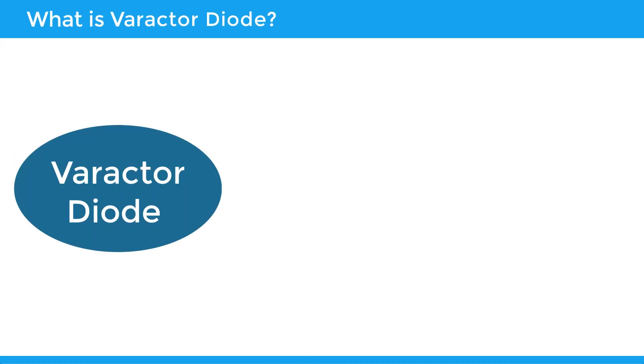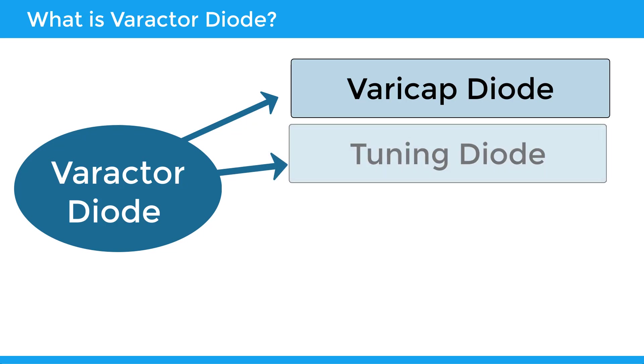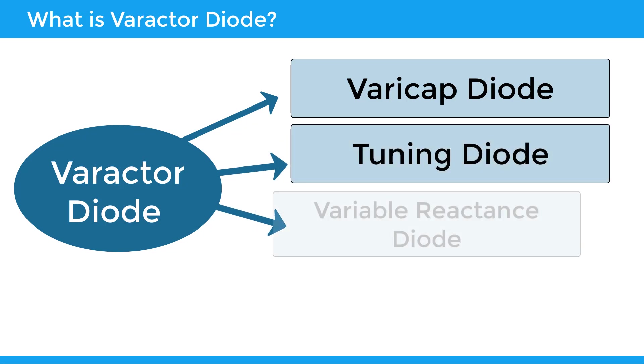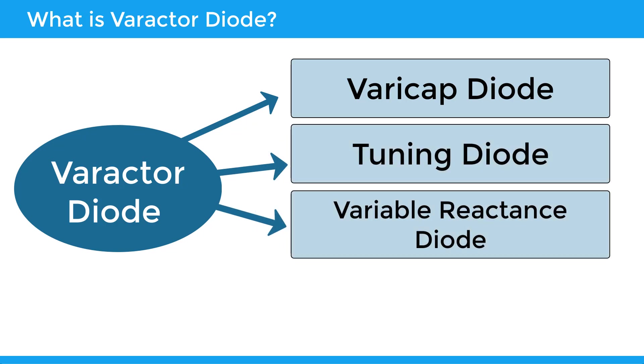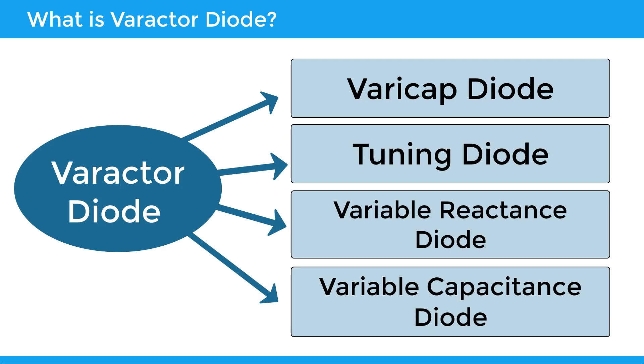Varactor diode is also sometimes referred to as varicap diode, tuning diode, variable reactance diode, or variable capacitance diode.